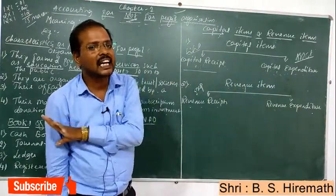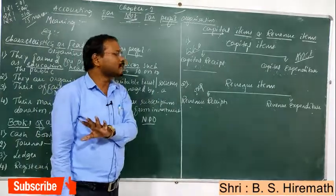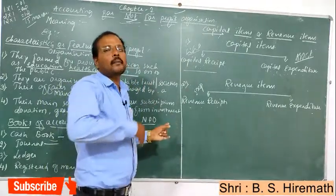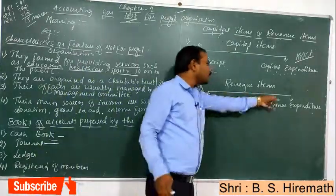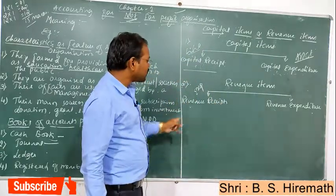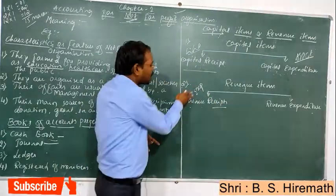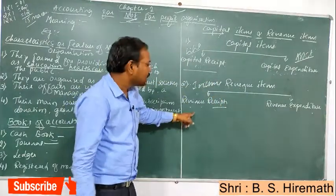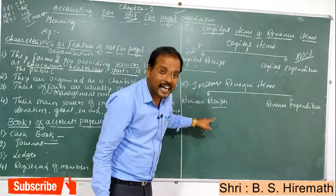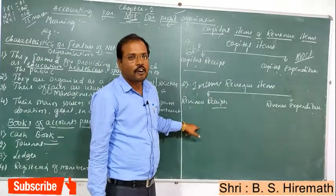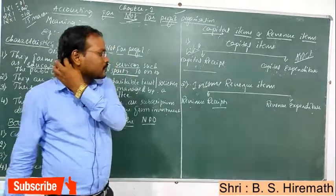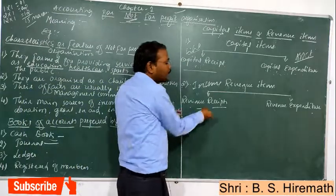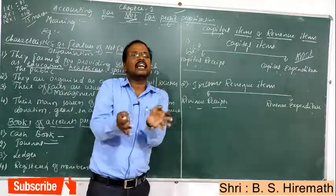Revenue items are recurring in nature. These items go to the income and expenditure account. There are two types: revenue receipt and revenue expenditure. Revenue receipt means it is income — it goes to the credit side of the income and expenditure account. Examples include admission fees, entrance fees, subscription, and government grant. These receipts are recurring in nature and issued regularly.